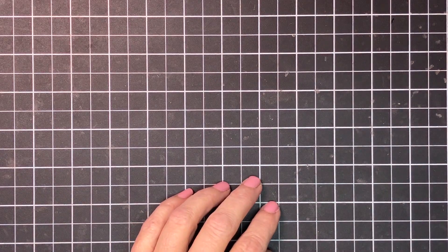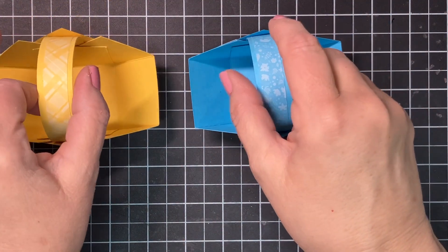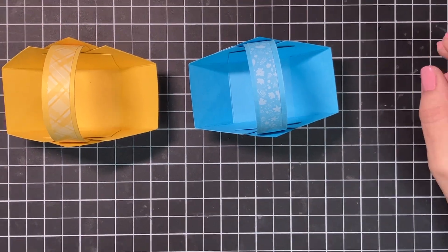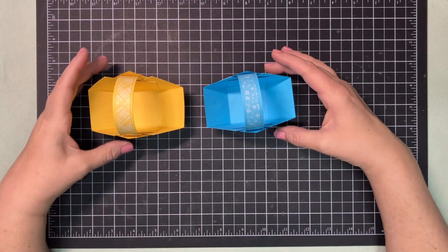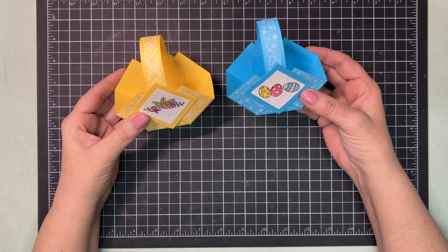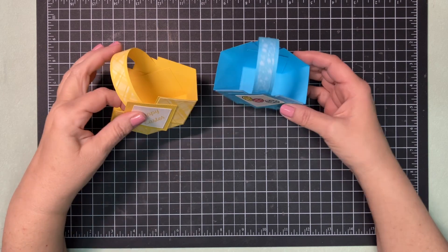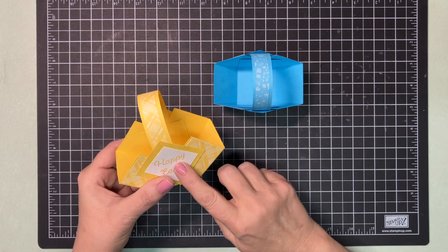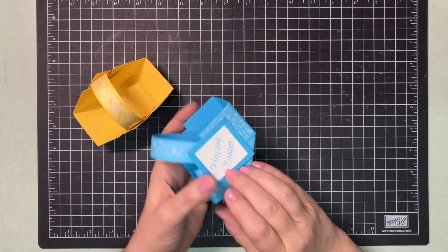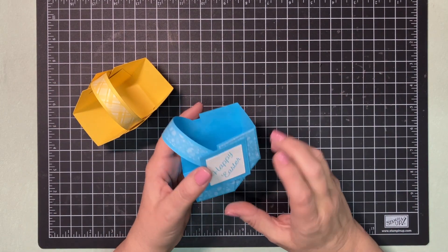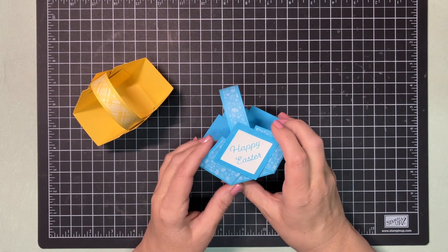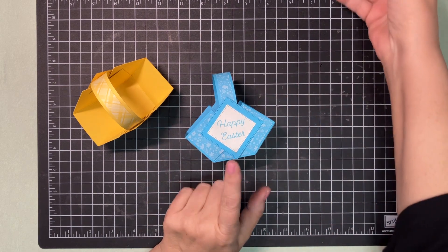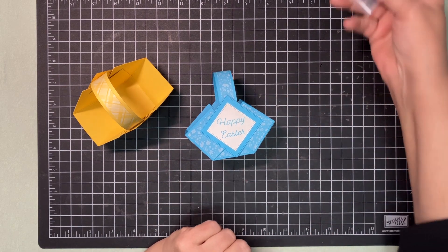And what we are making is mini Easter baskets for table favors or you could just give them as a little gift. They're decorated, we have flowers on this one, it says Happy Easter, this has Easter eggs and has Happy Easter on this side. You can put anything you want on.